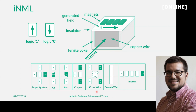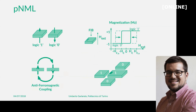Another magnetic technology is Perpendicular Nanomagnetic Logic (PNML). Here we also look at nanomagnets, but the magnetization direction is perpendicular with respect to the magnet's plane — going upward rather than lying in the plane as in INML. An example of a majority voter in this technology is shown here.